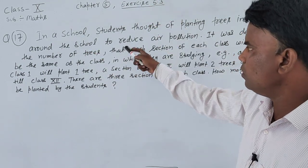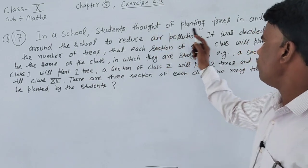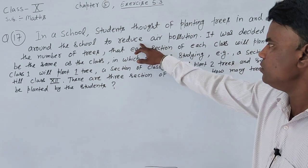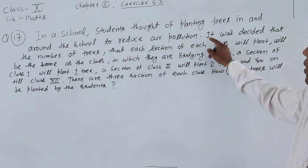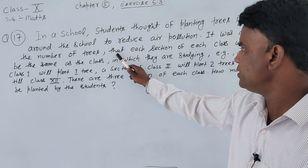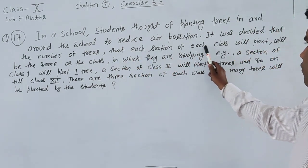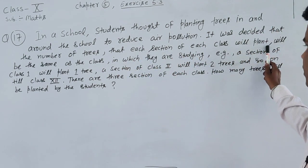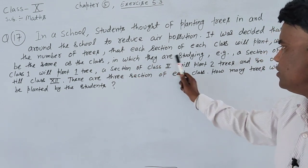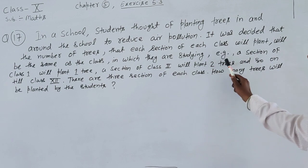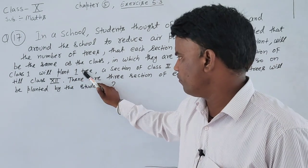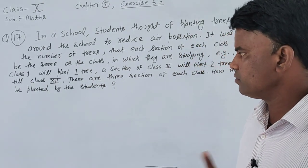In a school, students thought of planting trees in and around the school to reduce air pollution. It was decided that the number of trees that each section of each class will plant will be the same as the class in which they are studying. For example, a section of Class 1 will plant one tree. Class 1, so one tree.